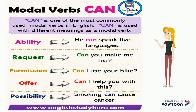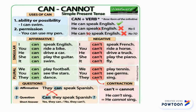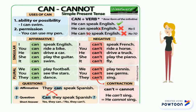For example, if you want to talk about an ability, you can say: 'He can speak five languages.' But if you want to talk about permission, you can say: 'Can I use your bike?' To form a sentence with the modal verb can, you only need to use the verb can plus the base form of the infinitive.